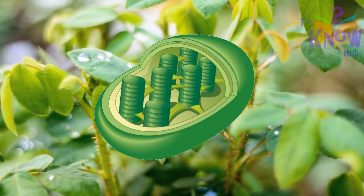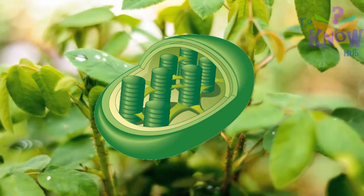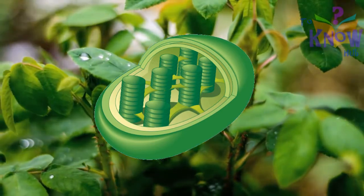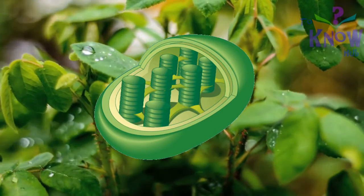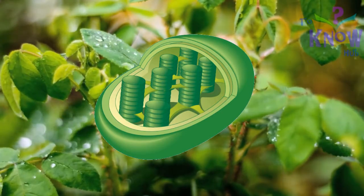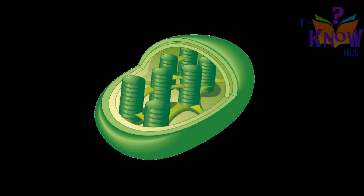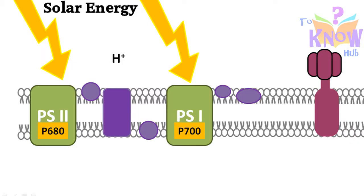Photosynthesis happens inside the chloroplast which contains chlorophyll. Now, photosynthesis has two stages. During the first stage, chloroplast collects enough solar energy and stores it in ATP. The second stage of photosynthesis is light independent. The first stage takes place on the thylakoid membrane. These disc-like parts are thylakoids. Their membrane has large complexes of proteins and pigments that absorb solar energy.